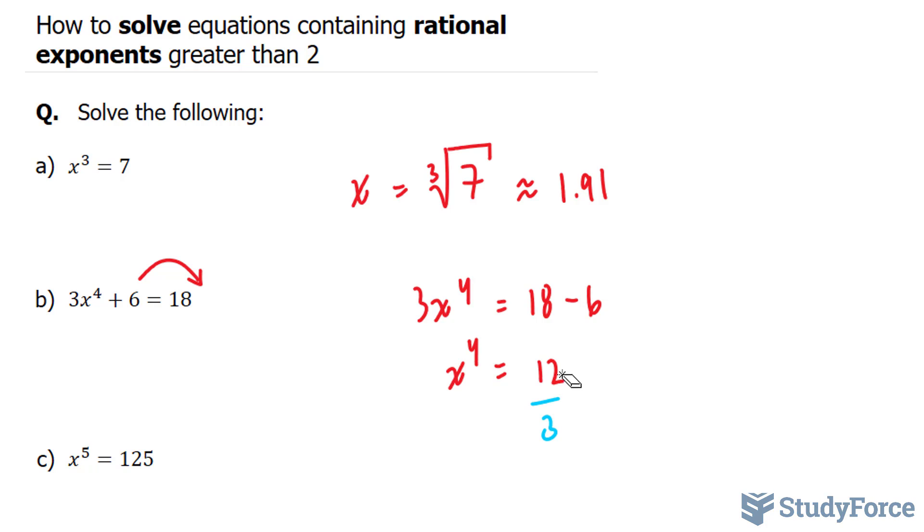And on the right side, this 12 and this 3, they divide equally into 4. So now we have x to the power of 4 is equal to 4.